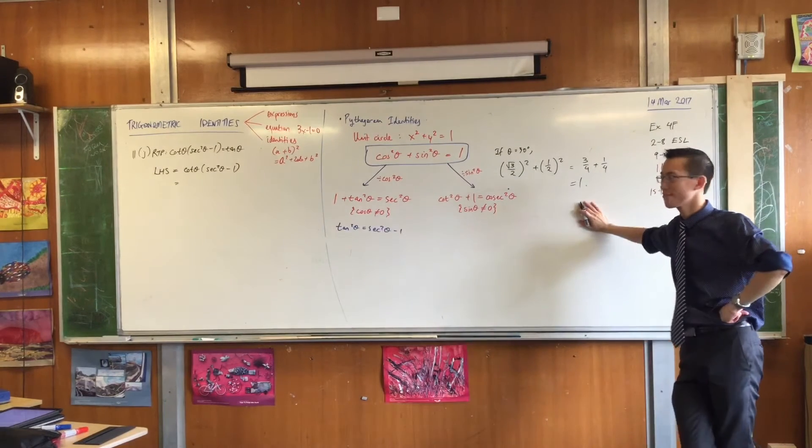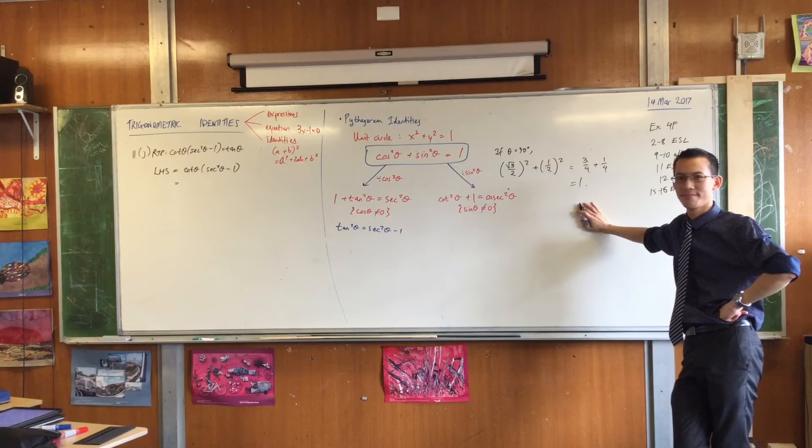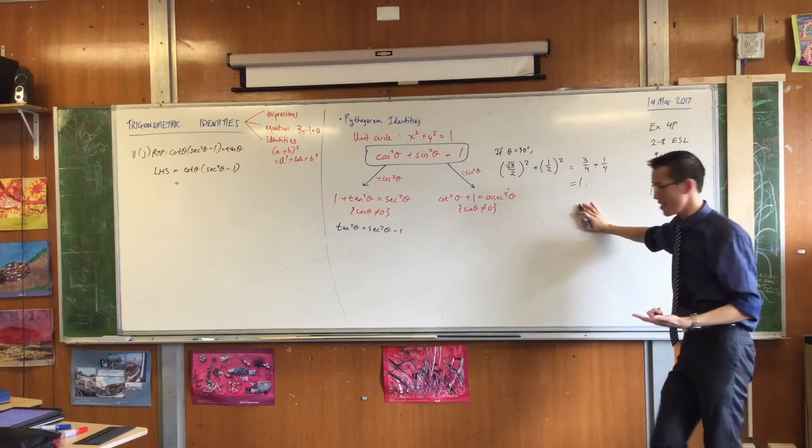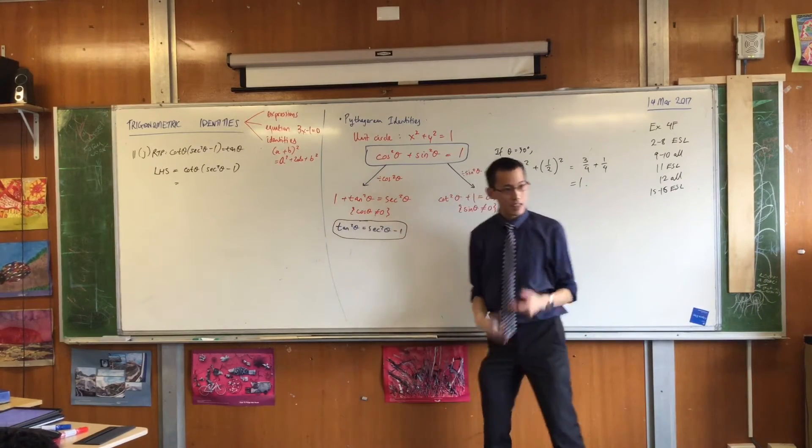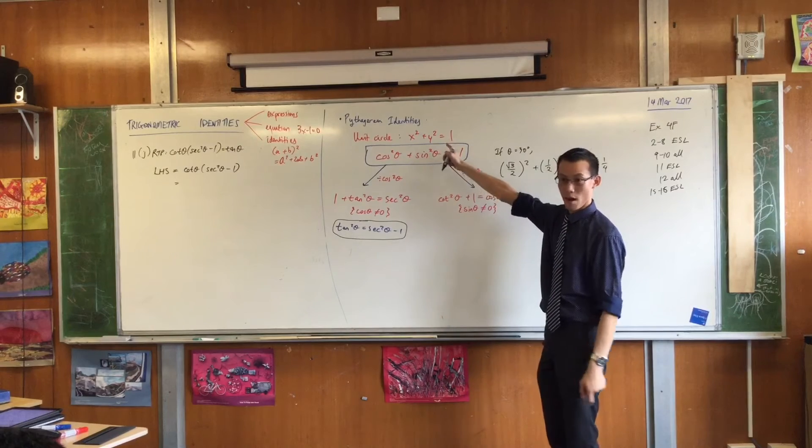Sec squared theta minus 1 equals tan squared theta based on identity. Okay, so you can see over here, I pointed out, if you take the Pythagorean identity, the original one, the primary one, and you massage it a little bit...